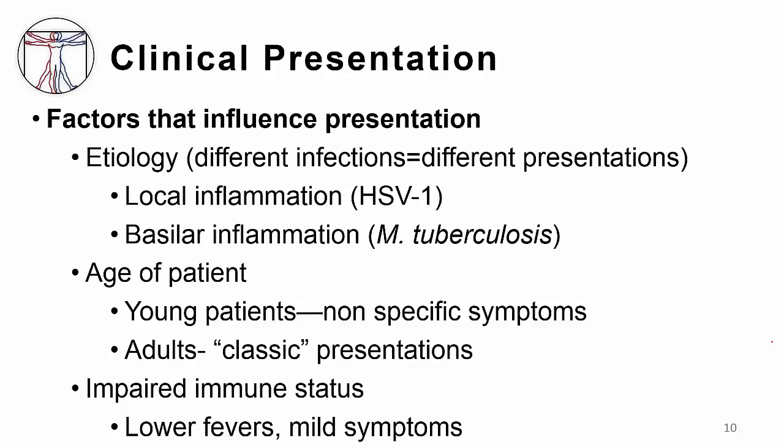There are additional factors that can influence how a patient presents to your care. Depending on the etiology, you're going to get different presentations. If you have local inflammation of the brain parenchyma, like with herpes simplex virus type 1, you may present with focal seizures like temporal lobe seizures. If you have inflammation along the base of the brain, like we see with Mycobacterium tuberculosis, you may present with hydrocephalus and slowly declining mental status, presenting as a coma.